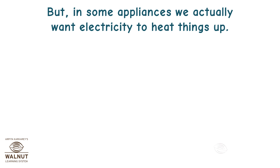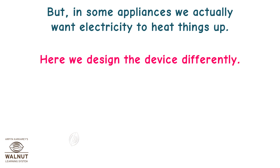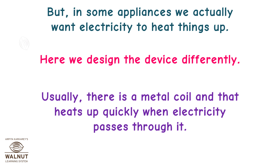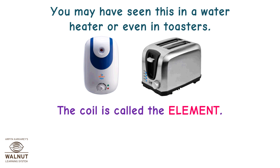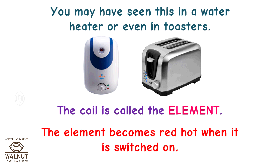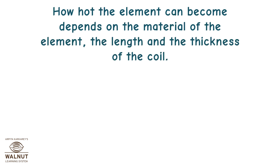But in some appliances, we actually want electricity to heat things up. Here, we design the device differently. Usually, there is a metal coil that heats up quickly when electricity passes through it. You may have seen this in a water heater or even in toasters. The coil is called the element. The element becomes red hot when it is switched on. How hot the element can become depends on the material of the element, the length and the thickness of the coil.